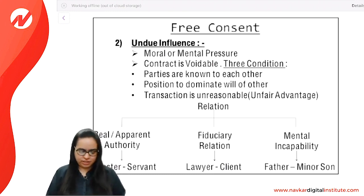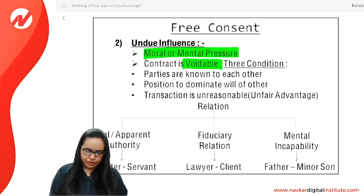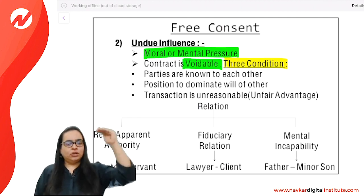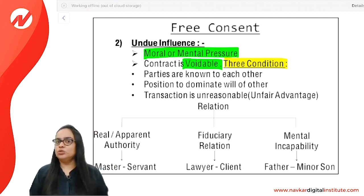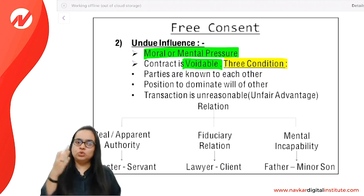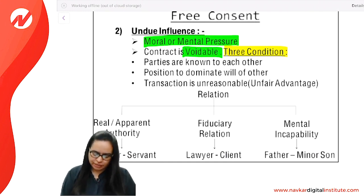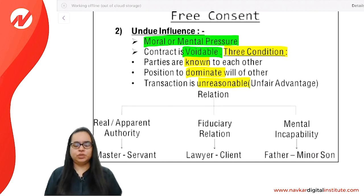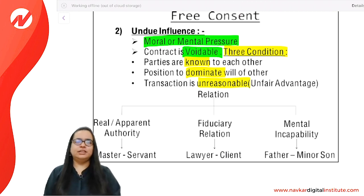Undue influence involves moral or mental pressure. The contract is voidable. Three conditions: the parties must know each other, one must be in a dominating position over the other, and the transaction must be unreasonable. Examples of undue influence relationships: master-servant, employer-employee, father-son, teacher-student, doctor-patient, lawyer-client.